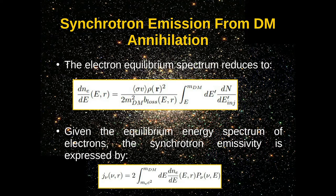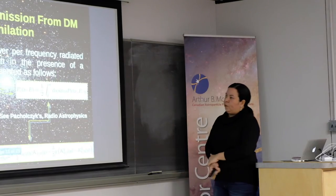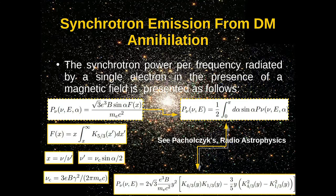We also have the particle physics information, the loss term, and the injection spectrum of electrons. We also need to calculate the synchrotron emissivity, which depends on the electron equilibrium spectrum and on the synchrotron power. To do this, we need to calculate the synchrotron power of a single electron, which depends on the electron mass, the magnetic field, some angle alpha, and a function f of x.